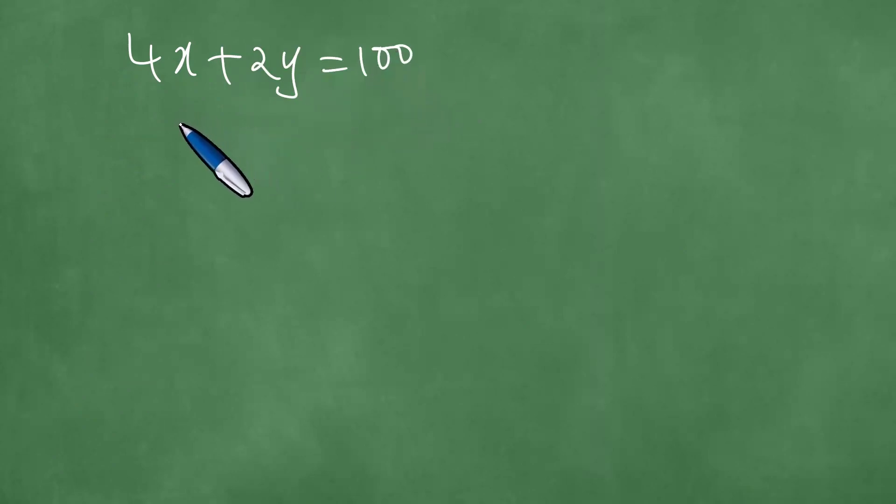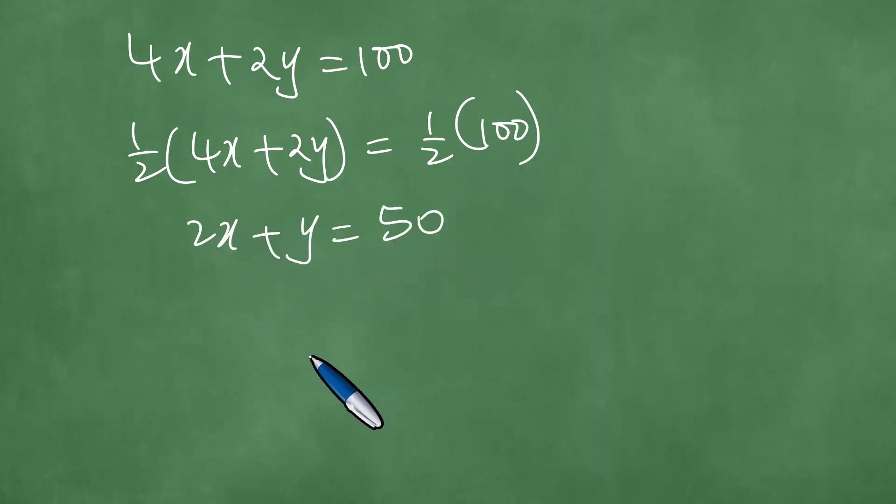And we proceed to multiply by one-half both sides like this. And then now we have exactly this equation here. Let us call this the second algebraic equation.